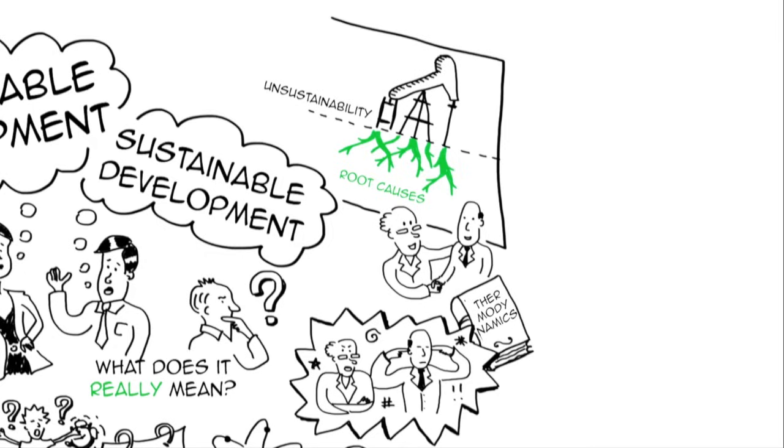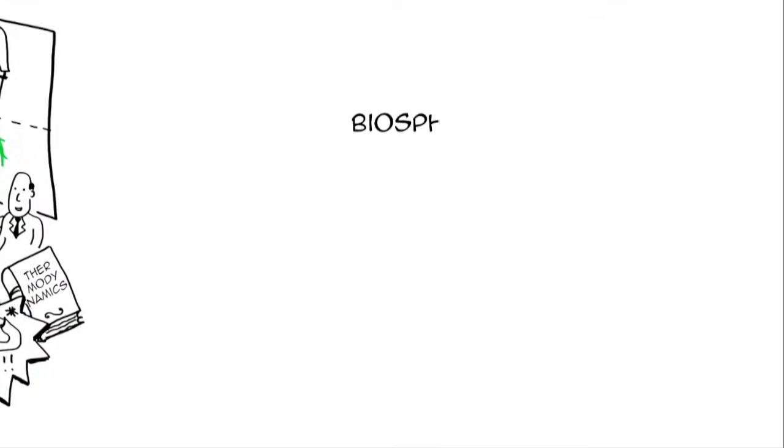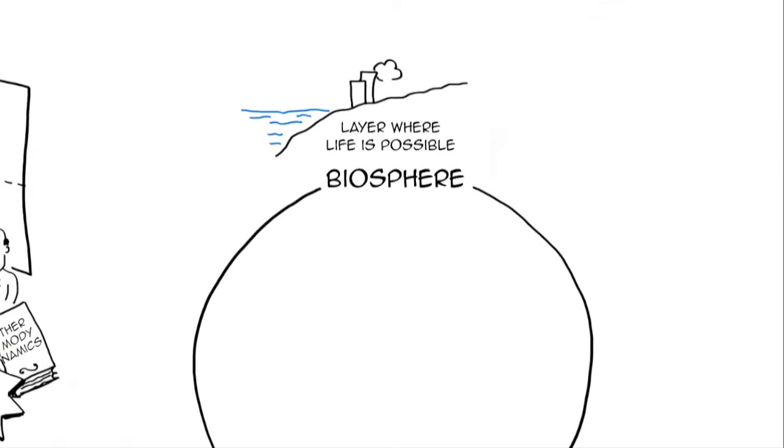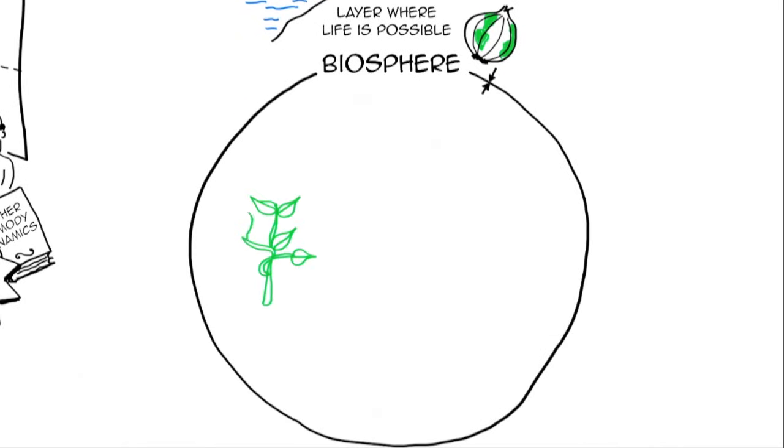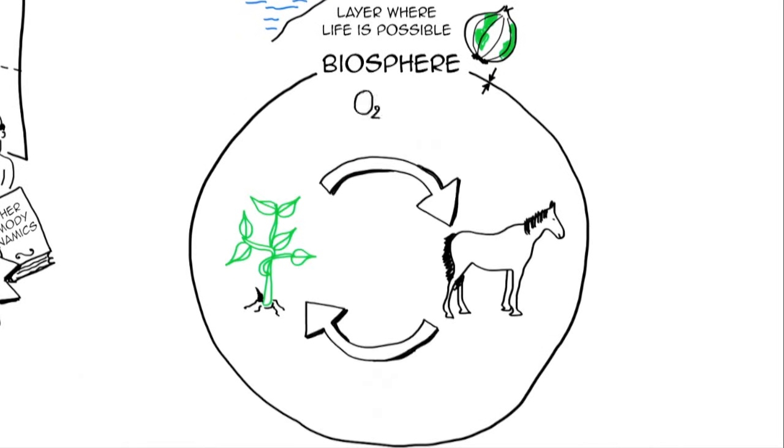First, they agreed on the fact that we live in the biosphere. The biosphere is this very thin layer at the surface of the earth where life is possible. Proportionally speaking, it is as thin and fragile as the skin on an onion. And within this biosphere, there are plants and animals. Plants produce oxygen and food, which are consumed by the animals.